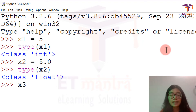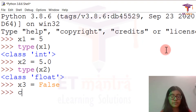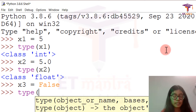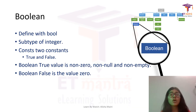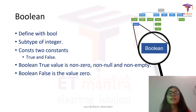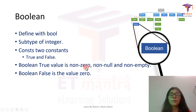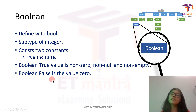Then I give x3 equal to false and check the type of x3 — it's boolean. So you just saw that I gave x3 a value of false and when I check its type it was boolean. Boolean is a subtype of integer and contains two values: true or false. Any non-zero value — 1, 2, 3, and so on — or any non-null, non-empty value stands for true, and 0 stands for false.